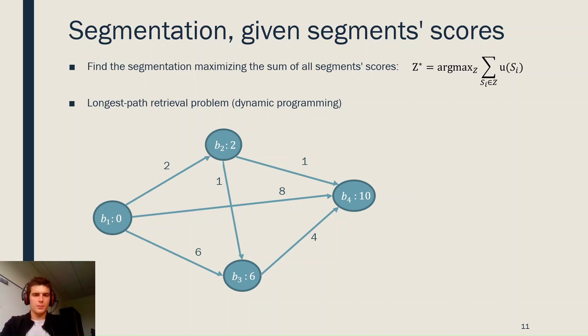To give a visual example, let's consider the case here with four bars, each represented by a node, and edges which correspond to segments between bars. Here, the optimal segmentation is the segmentation B1, B3, B4, because it corresponds to the longest path in the graph.